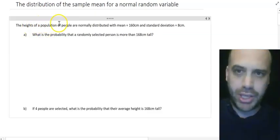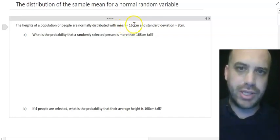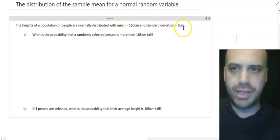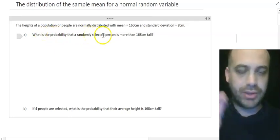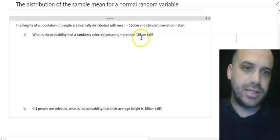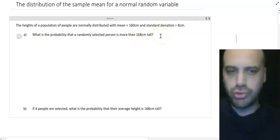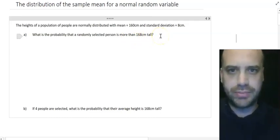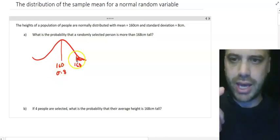All right, so we have a population of people with a mean 160 and a standard deviation of eight centimeters. We're going to pick one person at random and find the probability that they're more than 168 centimeters tall. We can draw the normal distribution for this. So mean 160, standard deviation equals eight.